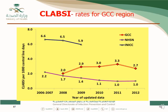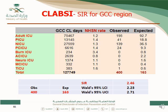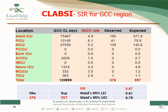The last paper published from the GCC data is the CLABSI data, which is very similar to the VAP data — much lower than INIC but slightly higher than NHSN. Comparing the CLABSI data to NHSN gives an SIR of 2.46, meaning 1.5 times higher than NHSN. Comparing to INIC, the SIR is 0.67, meaning it is 33% lower than INIC data.